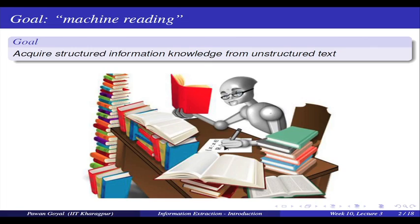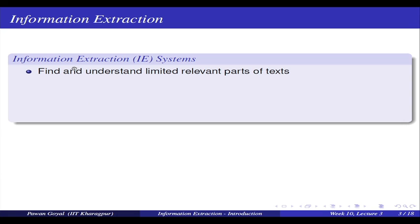This is like a caricature to denote that yes, we will have a lot of knowledge available on the web, and the machine is trying to go through that knowledge and get some structured content that can be useful. Information extraction systems try to find and understand various different relevant parts of the text data. You will have a lot of text and you are trying to gather certain important information from there.